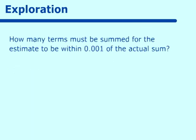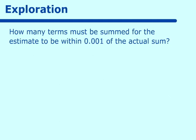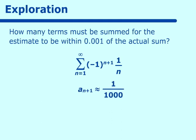The last question: how many terms must be summed for the estimate to be within 1/1000 of the actual sum? Since our series is (-1)^(n+1) times 1/n, we need a sub n plus 1 to equal 1/1000, meaning 1/(n+1) = 1/1000, so n must equal 999. This concludes the lesson on ratio tests and alternating series tests.